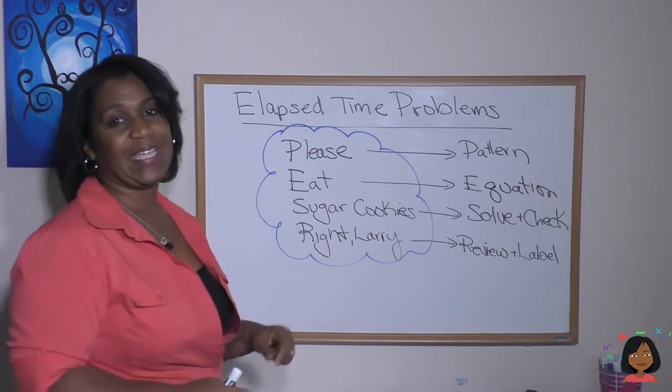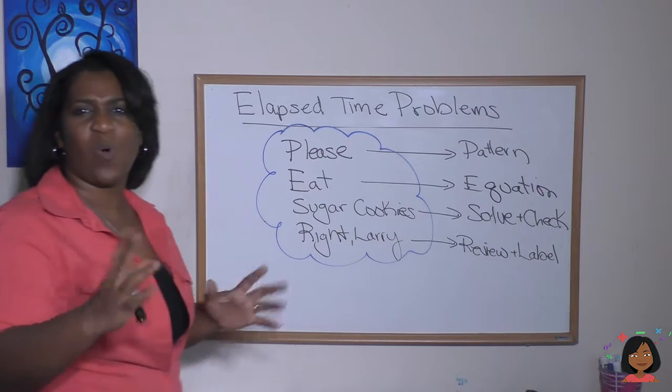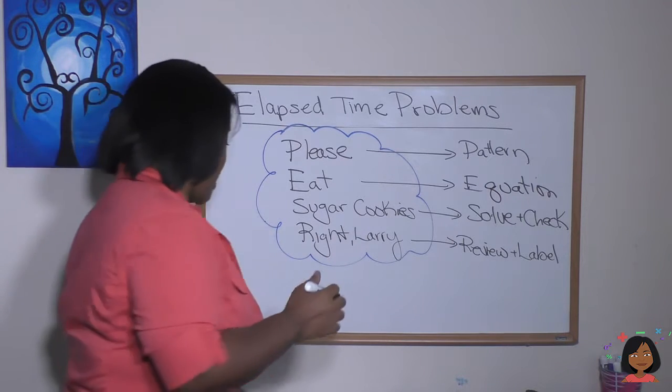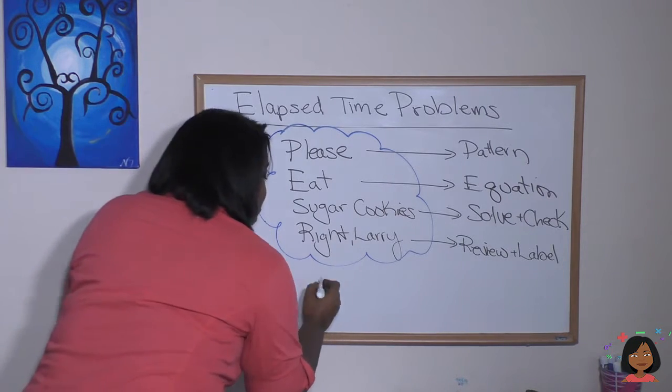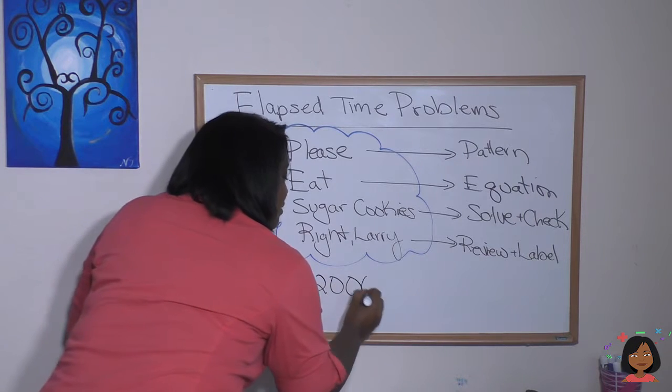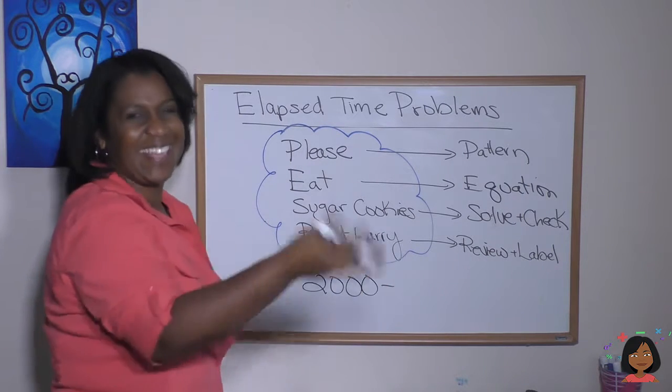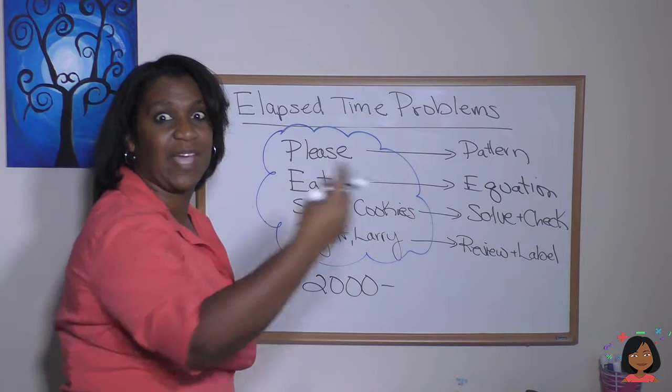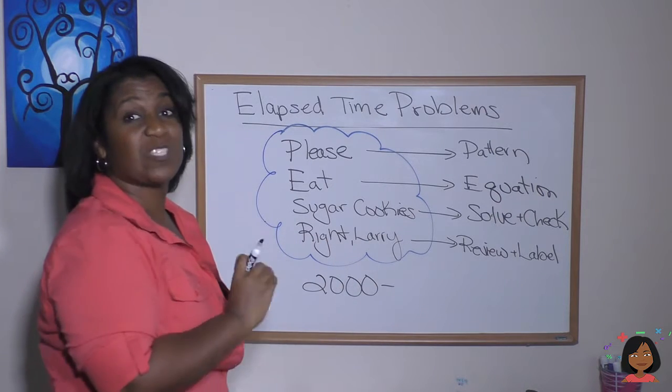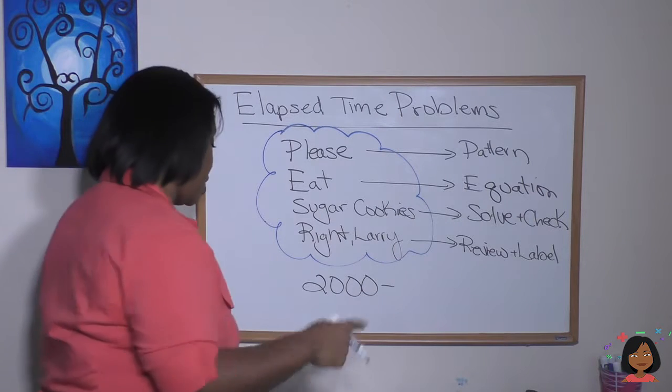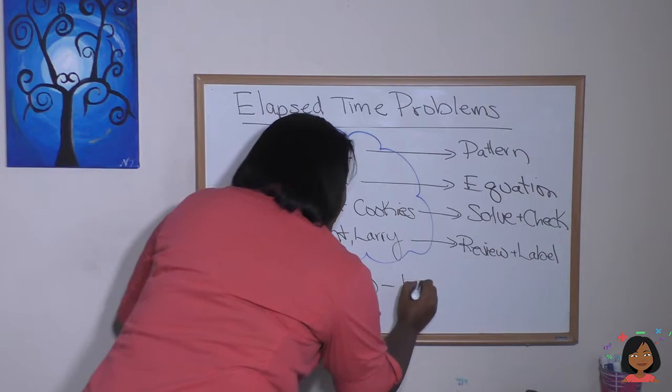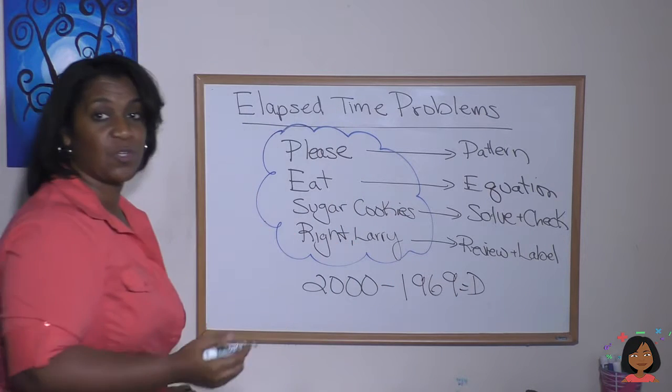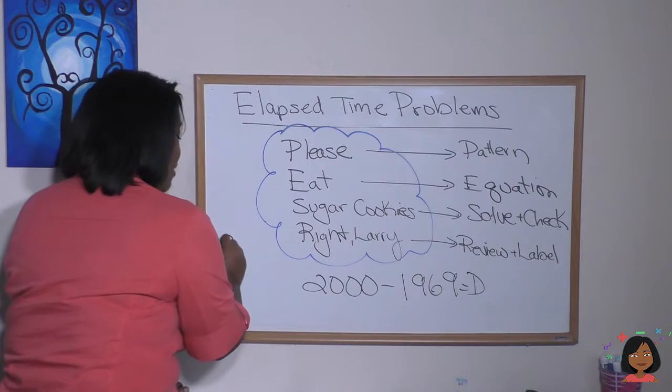Let's go to E, Eat, which is Equation. What's our equation going to be? We always start with the later year, which was 2000, we subtract that from the earlier year, which was 1969, and we look for the difference between the two. That's a simple subtraction problem.